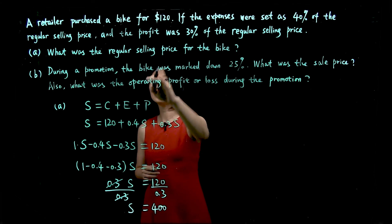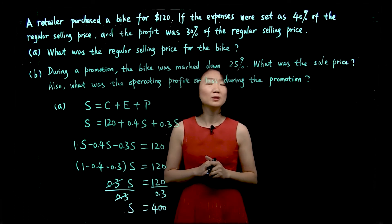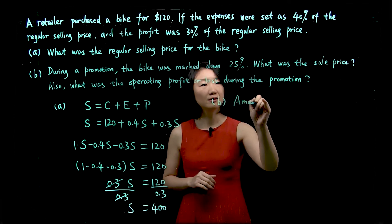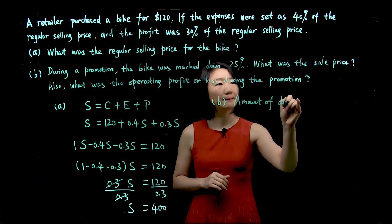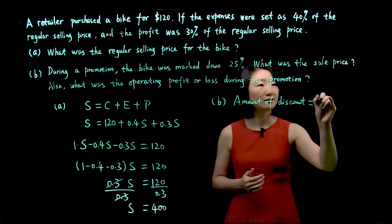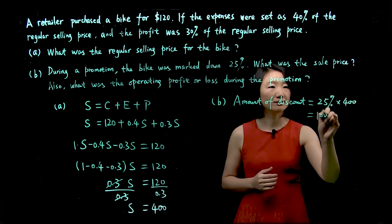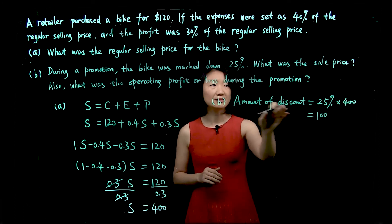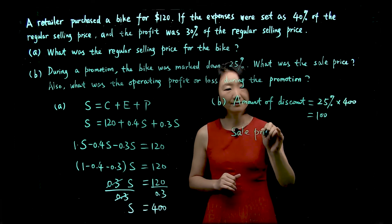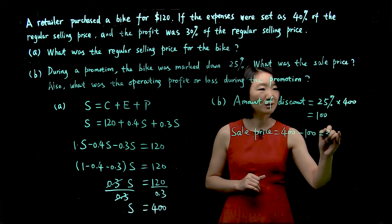Now let's look at question B. During the promotion, the bike was marked down 25%. What was the sale price? The amount of discount is 25% of the regular price, which is 25% of $400, that is $100. So after offering a discount of $100 — also 25% off — the sale price is the regular selling price subtract the amount of discount: $400 minus $100 equals $300.